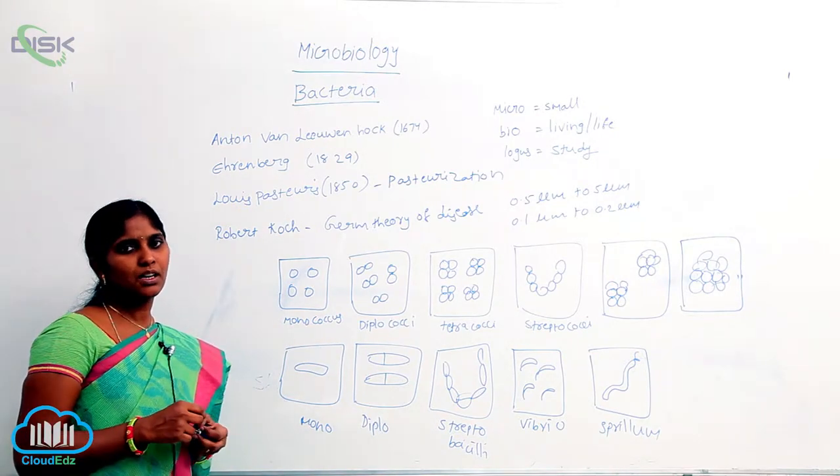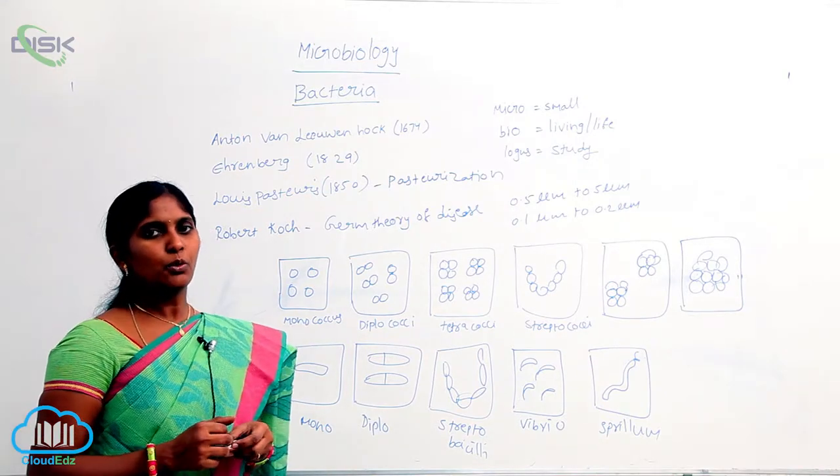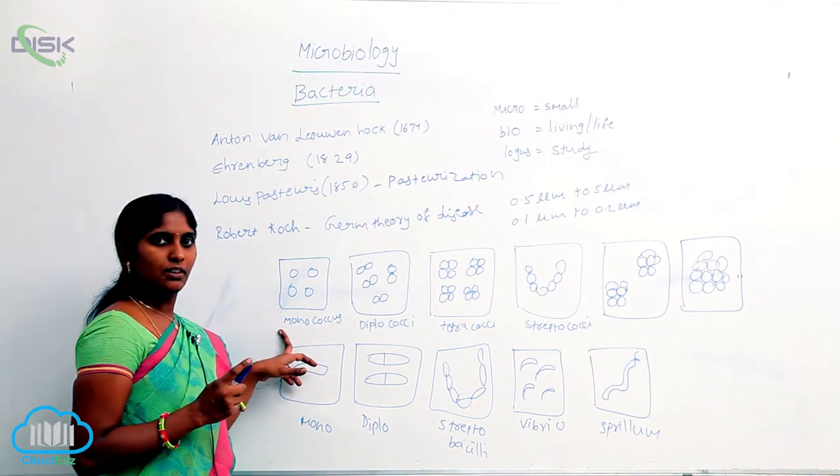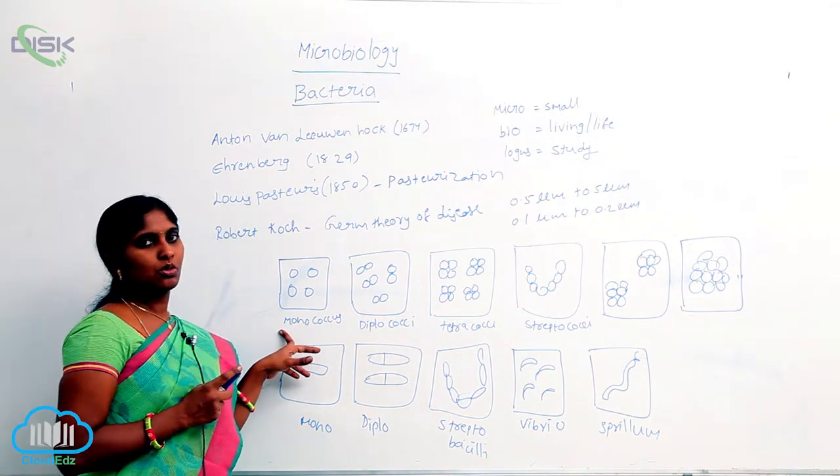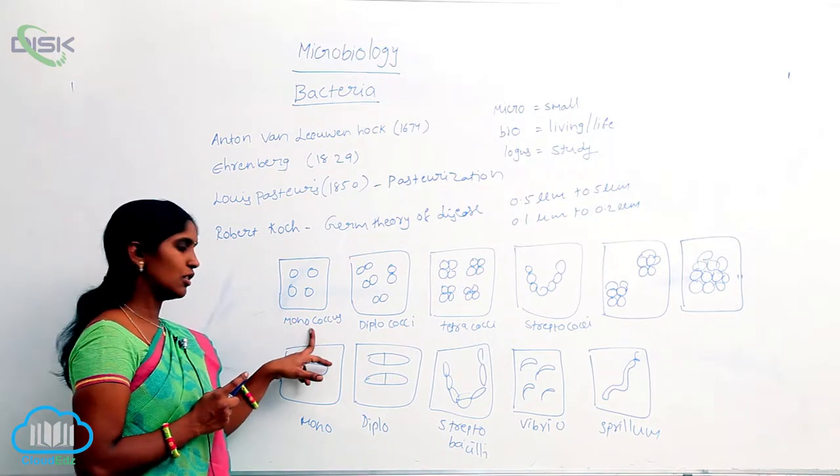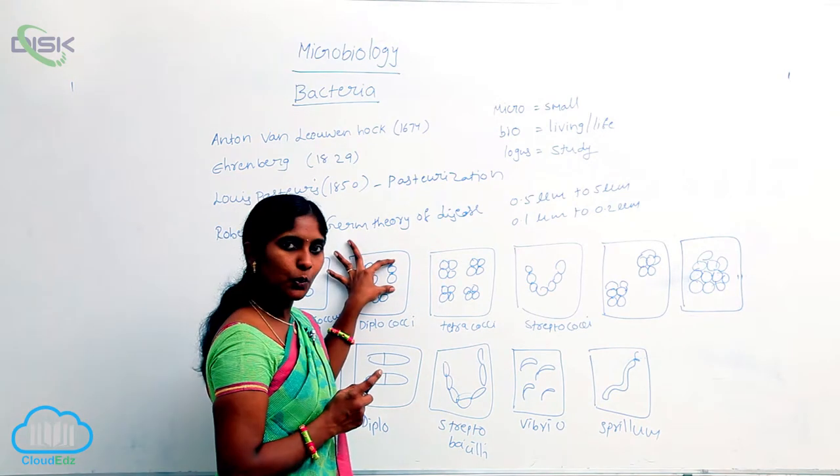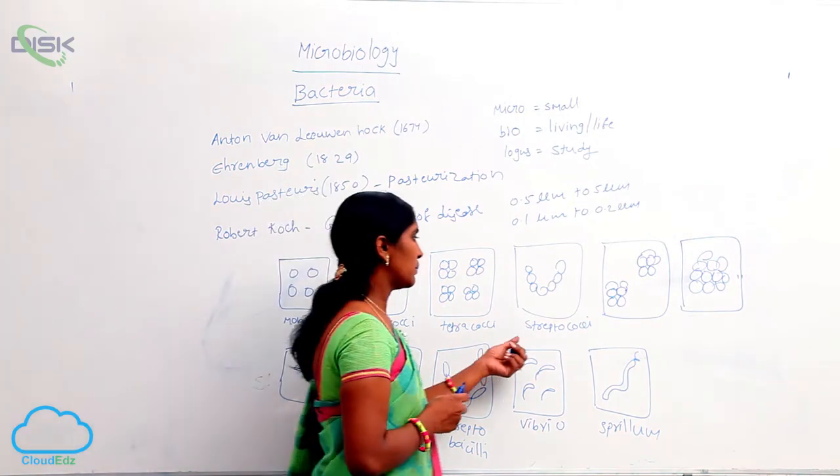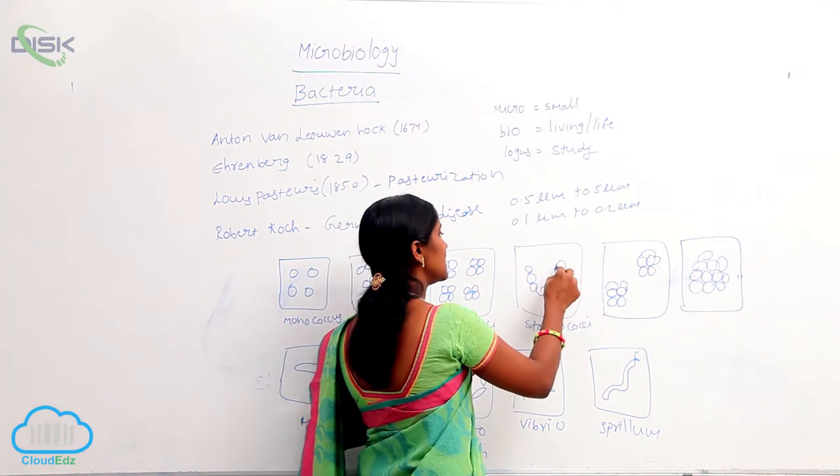Bacteria may exist in isolated form, pairing form, or colony forms where groups live together. Monococcus means a single coccus cell. Diplococcus means a pair of coccus cells. Tetracoccus has four cells. Streptococci means coccus cells arranged in a chain manner.